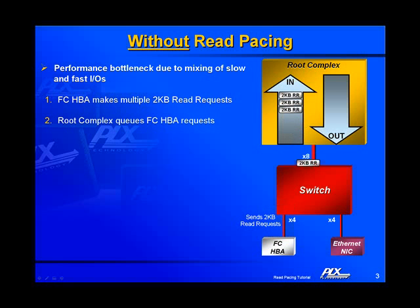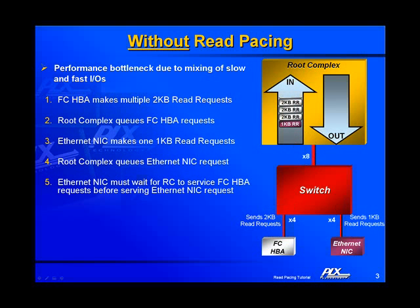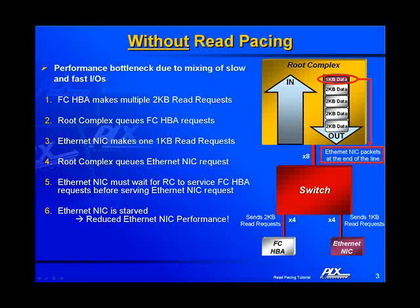The Fiber Channel HBA makes multiple 2K read requests, and the root complex queues up those requests. The Ethernet NIC then makes a single 1K read request, and the root complex queues that request as well.